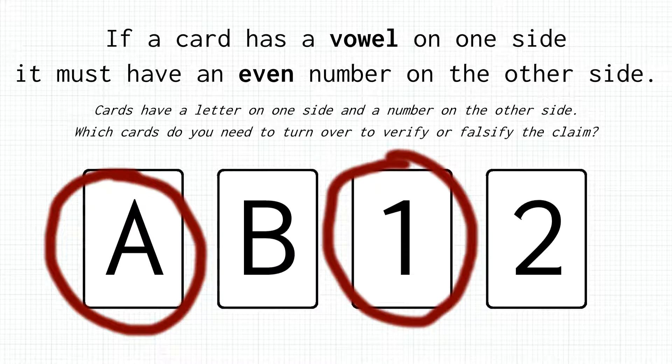We must ensure that it doesn't have a vowel on the other side. If it does, then the rule is violated, since a card with a vowel needs to have an even number, and 1 is clearly an odd number.